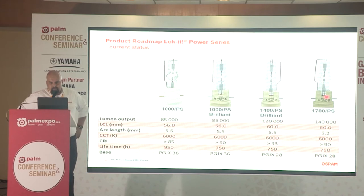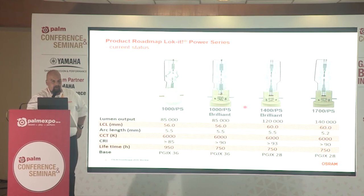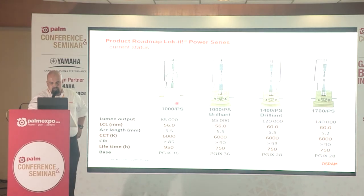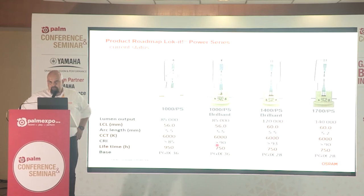Locket has been on the market from Osram for roughly 10 years. Here you can see the newest stuff — the latest development we call the Locket Power Series. The very first member was 1000 W, which we made for Martin Professional, with quite high CRI at that time — higher than 85. All the other members of this family which came later already have CRI higher than 90. CRI higher than 90 is usually standard for HMI lamps or generally for lamps used for film or theater.